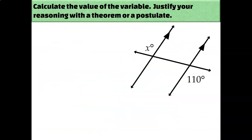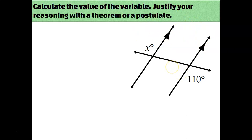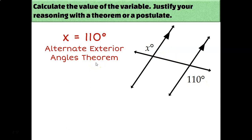For each diagram, I want us to calculate the value of x and state which theorem or postulate supports our reasoning. In this case, the angle labeled x degrees and the angle labeled 110 degrees are alternate exterior angles, because one is above the transversal, the other is below, and they're on the outside of the two parallel lines. Since alternate exterior angles are congruent, x must also measure 110 degrees, and the reason is the alternate exterior angles theorem.